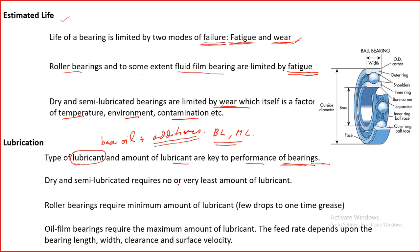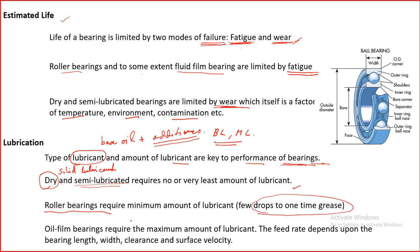Dry and semi-lubricated bearings require no or very little lubricant because by nature they have solid lubricants inside that provide low friction. In semi-lubricated bearings, some oil or grease on the surface handles friction. Roller bearings require a minimum amount of lubricant — just a few drops to one application of grease. Although rolling element bearings show low coefficient of friction because rolling friction is low, lubrication is still necessary since there will be some sliding or slip.